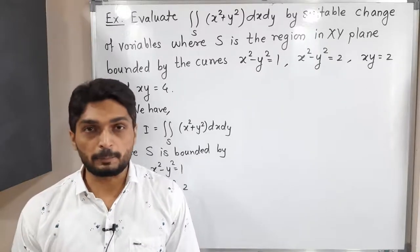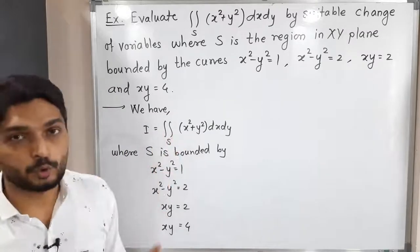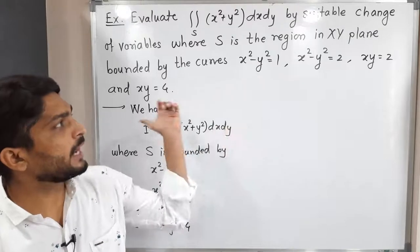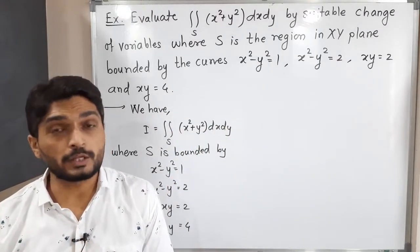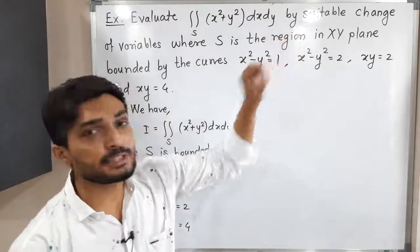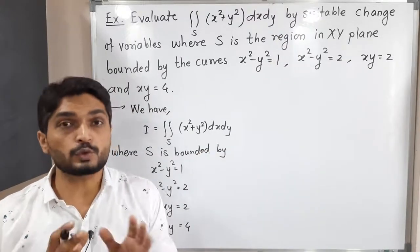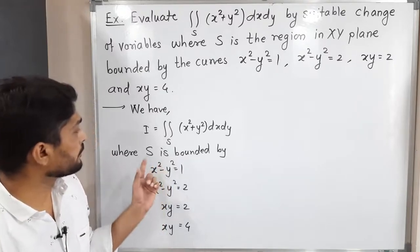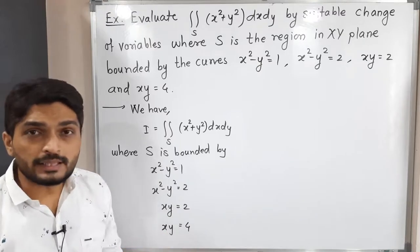Let us discuss this example. We have to find the value of a double integration, and the region is bounded by four given curves — four hyperbolas. We have to solve this double integration, and they have clearly mentioned to use a suitable change of variables, meaning we have to put some substitution and then solve this problem.